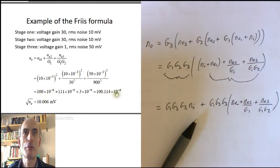Take the square root of the final value and 10.006 millivolts is the RMS equivalent input noise for this whole amplifier chain, which is really not significantly different from just the noise introduced by the first stage.